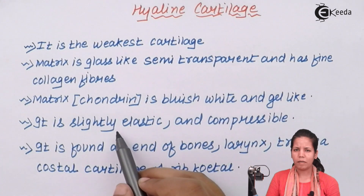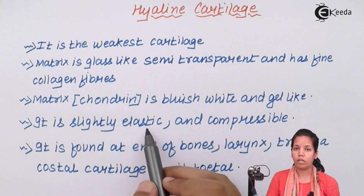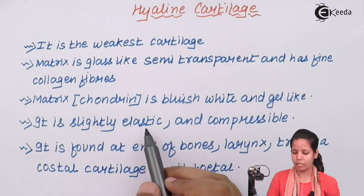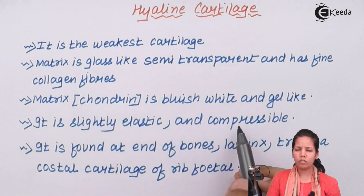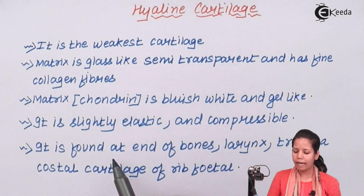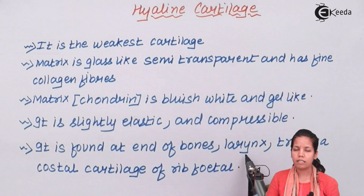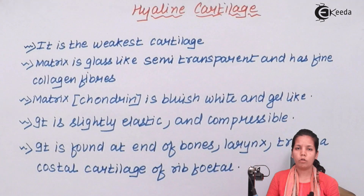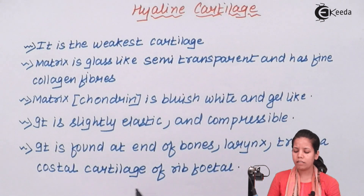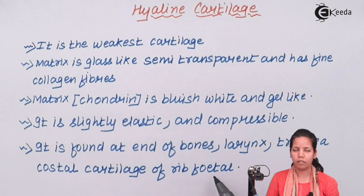This cartilage is basically slightly elastic — not elastic to a great extent so that it can bear pressure or act as an insulating material — and compressible to a little extent, not as much as other tissues. It is found at the end of your bones, especially at the periphery of your bones, in your larynx — which is nothing but your voice box or Adam's apple — and in the trachea, or your windpipe in your respiratory system, and at the costal cartilage of your ribs.